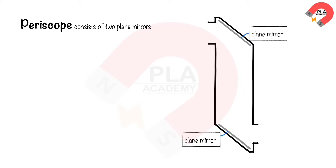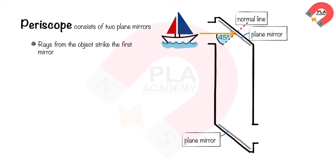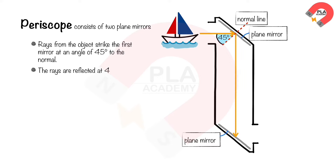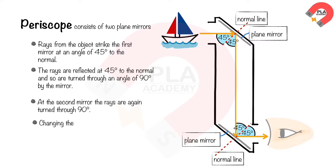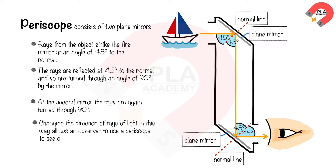A periscope consists of two plane mirrors. Rays from the object strike the first mirror at an angle of 45 degrees to the normal, and are reflected at 45 degrees, turning through 90 degrees. At the second mirror, the rays are again turned through 90 degrees, allowing an observer to use a periscope to see over or around objects.